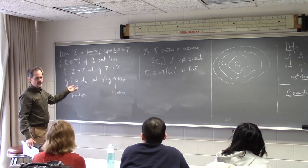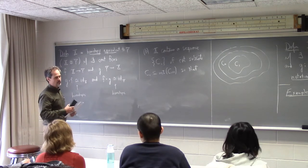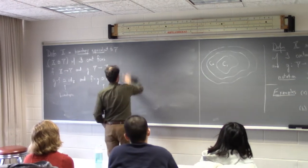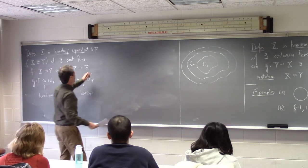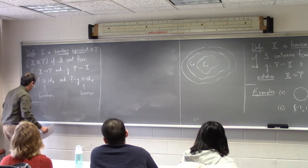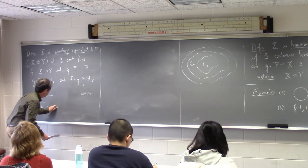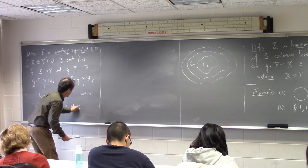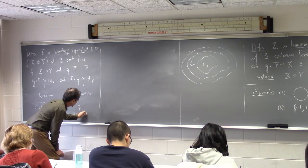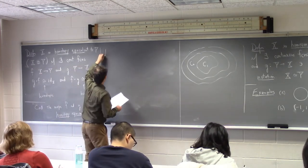The good news and the bad news is that homotopy equivalence is also an invariant — the fundamental group is an invariant under homotopy equivalence. I want to comment on why that's a good thing and also why that's a bad thing, and then show how we can overcome the bad parts. We call the maps f and g homotopy equivalences, as opposed to homeomorphisms.